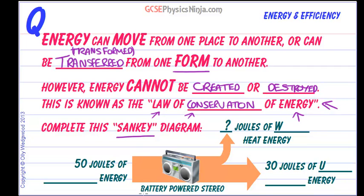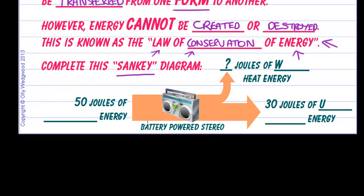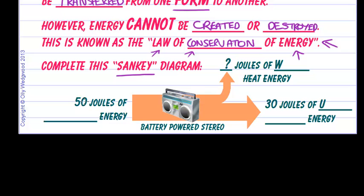So we're going to look at a battery-powered stereo. And so what do we start off with? What type of energy is starting off when we want to switch this on and listen? Well, it's got batteries in it, and batteries contain a form of chemical energy, chemical potential energy if you like. And we've mentioned potential means stored.